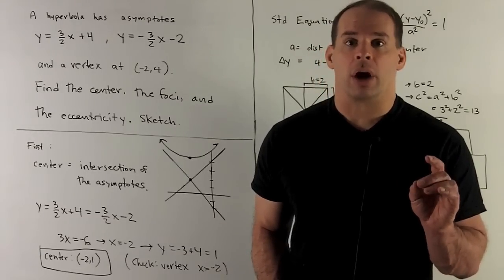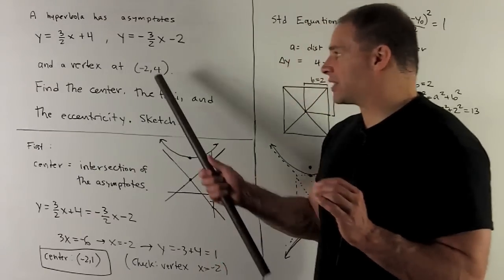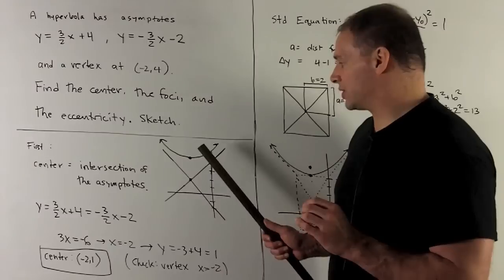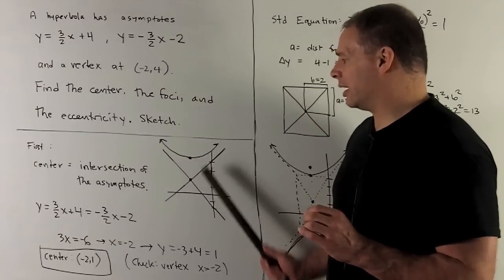Now, as a check on our work, if you notice, the vertex that we're given has the same x value, and that makes sense since these should be directly above one another.